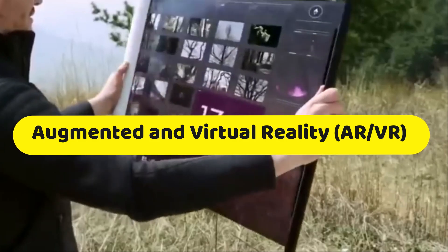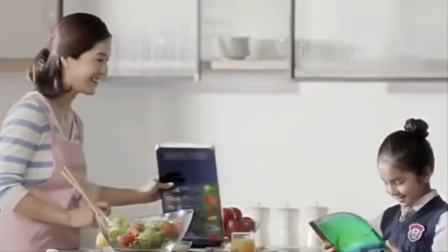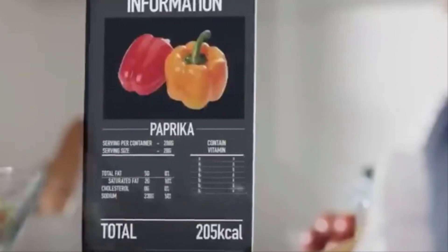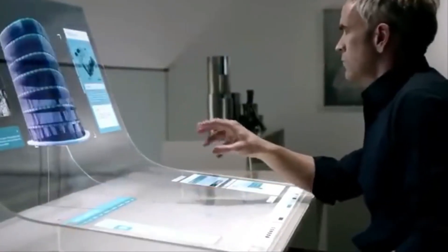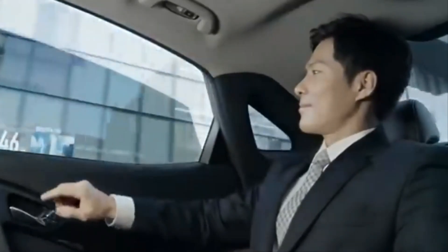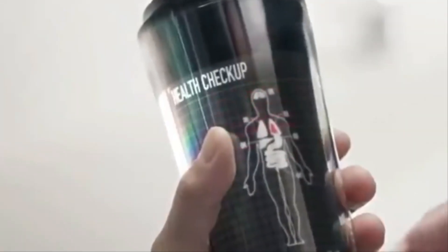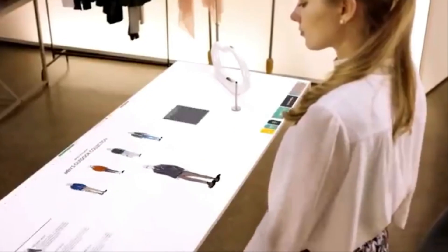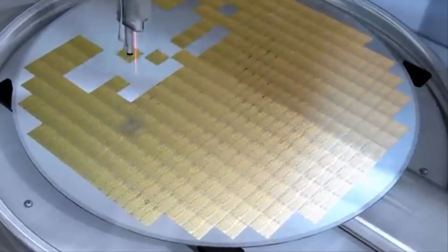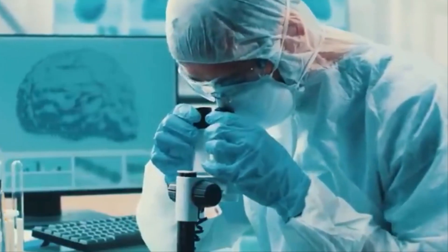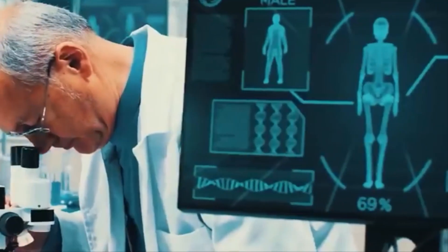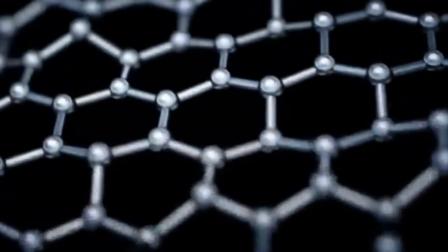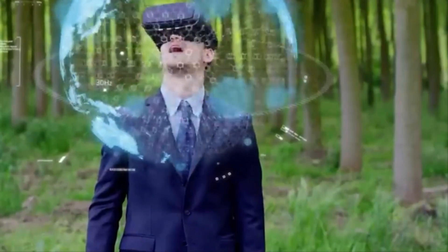Number 5: Augmented and Virtual Reality. The way we interact with the digital world is about to undergo a transformation because of augmented and virtual reality (AR and VR). Digital information is superimposed on our physical environment in augmented reality, enriching experiences in the real world. Virtual reality, on the other hand, immerses people in purely digital settings and takes them to other realms.